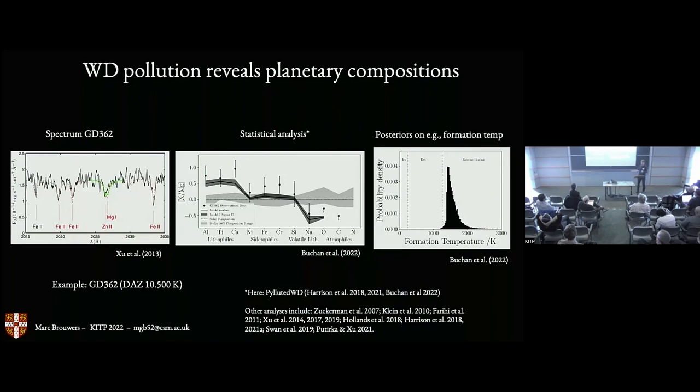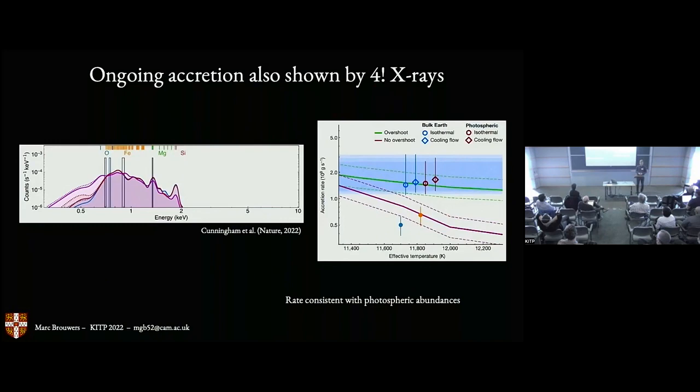At the same time, we should be honest, and in many cases such statistical analysis shows very broad distributions, in which case you can't learn very much from those particular white dwarfs. Just recently this year, Tim Cunningham published in Nature, white dwarf accretion not just measured from photospheric abundances but also from the detection of X-rays. He detected four individual X-ray photons corresponding to oxygen, iron, magnesium. That amount of photons is consistent with what's inferred from photospheric pollution in terms of accretion rate.